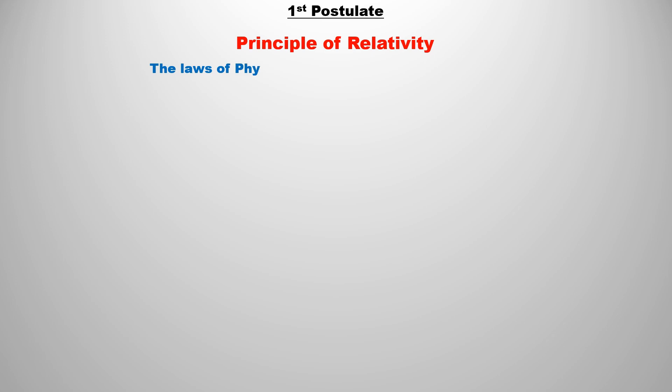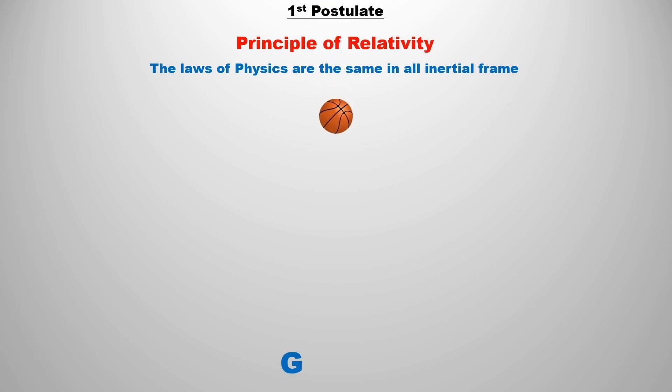The first postulate of Special Theory of Relativity is the Principle of Relativity. According to this, the laws of physics are the same in all inertial frames of reference. This means that if two persons are in different inertial frames, the laws of physics will remain the same for both. To understand this, let's take an example.